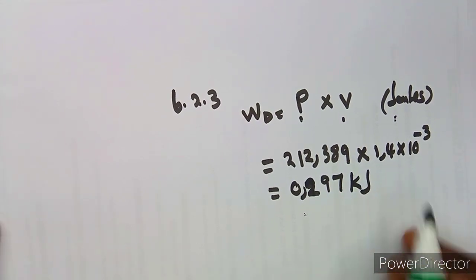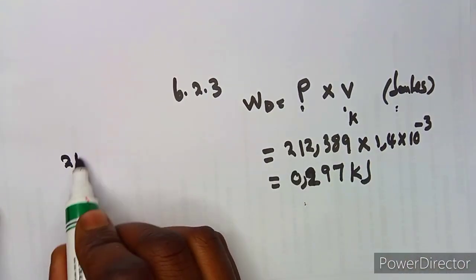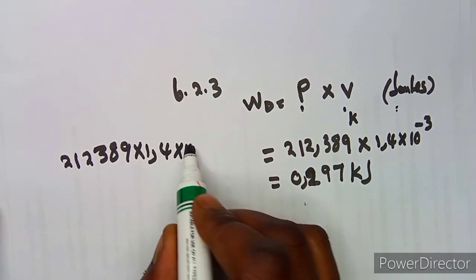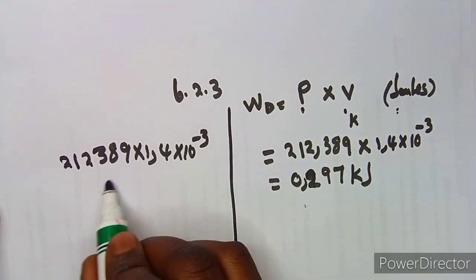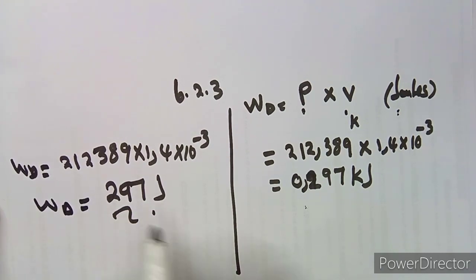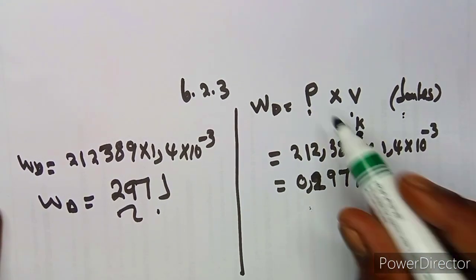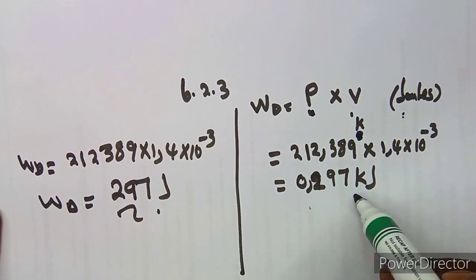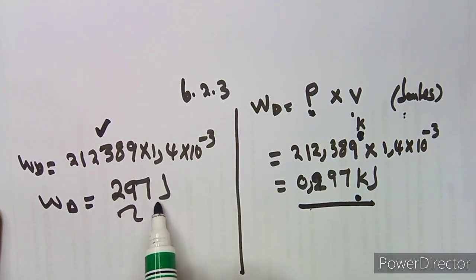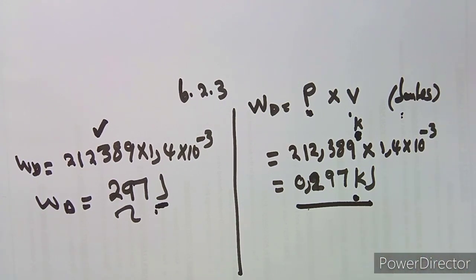If you use pressure in kilopascals, you get the work done in kilojoules — approximately 0.297 kJ. Alternatively, using pressure in pascals: 212,389 × 1.4 × 10⁻³ gives approximately 297 joules. Either approach is valid — the choice of units determines whether the answer is in kilojoules or joules.